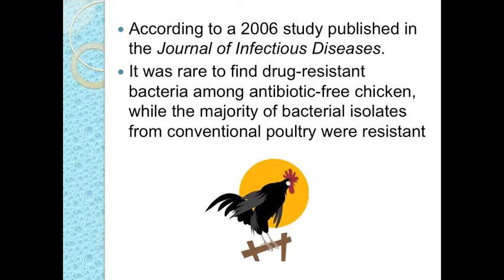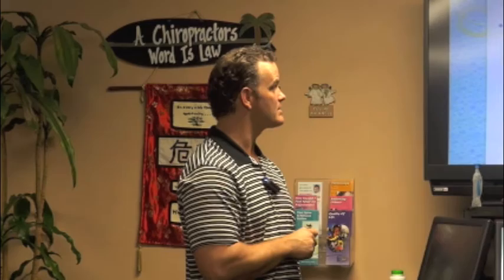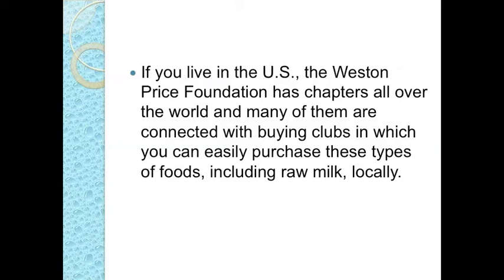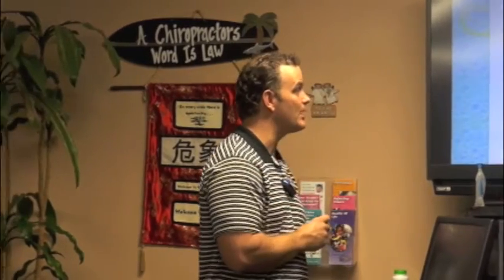In 2006, a study published in the Journal of Infectious Diseases found that drug-resistant bacteria among antibiotic-free chickens were hard to find. So if you have antibiotic-free, free-range chicken, you have a better chance of having healthier meats and less risk of drug-resistant infection. The Weston A. Price Foundation has chapters all over the world, many connected with buying clubs where you can purchase raw milk and healthy meats and vegetables. They have FDA investigators on-site doing daily checks to make sure everything is healthy and free of bacterial contamination.